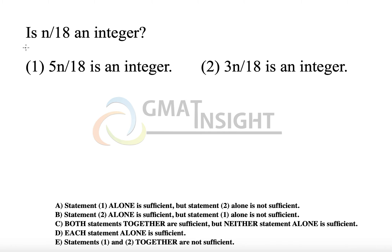The first question is: is n/18 an integer? This is a typical Type 1 question which needs to be answered in the form of either yes or no. Now let's see the first statement: 5n/18 is an integer. Many students actually think about this incorrectly.